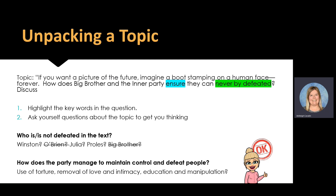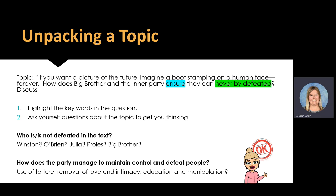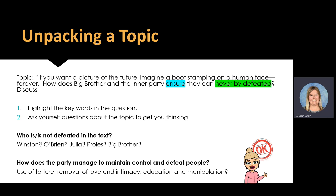'Ensure they are never defeated.' So initially I ask myself the question, who is or is not defeated in the text? Winston, O'Brien, Julia, the proles, Big Brother. And from there I go: how does the party manage to maintain control or defeat these people? Well, by looking at that quote, the use of torture is pretty important in the text.